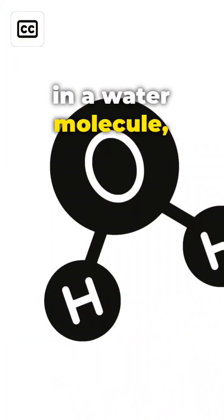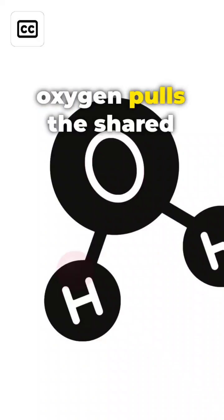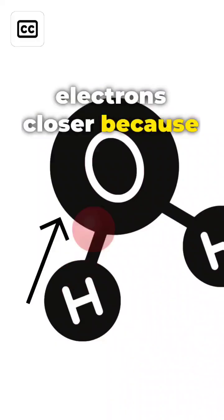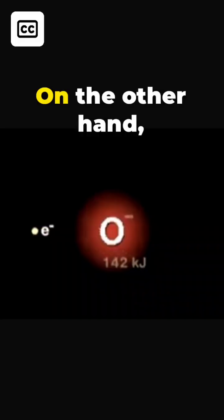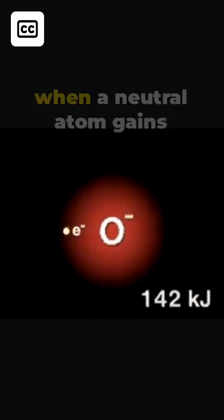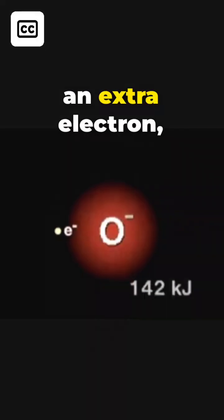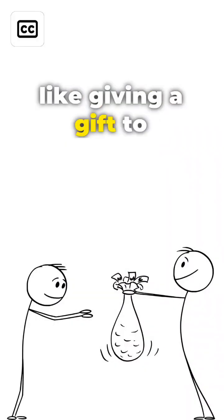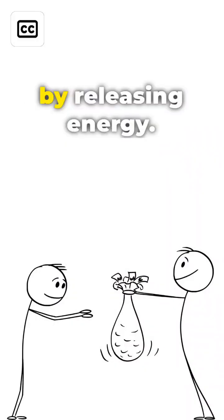For example, in a water molecule, oxygen pulls the shared electrons closer because it is more electronegative. On the other hand, electron affinity is the amount of energy released when a neutral atom gains an extra electron, like giving a gift to an atom and it gets happy by releasing energy.